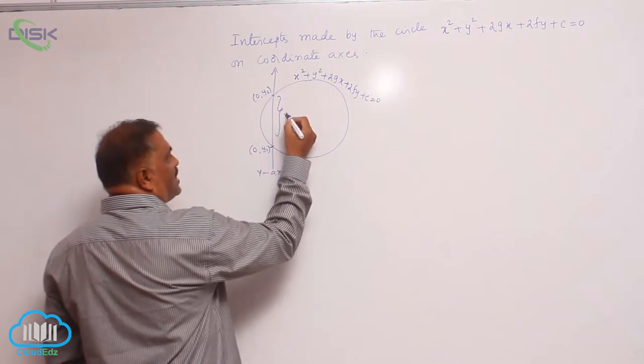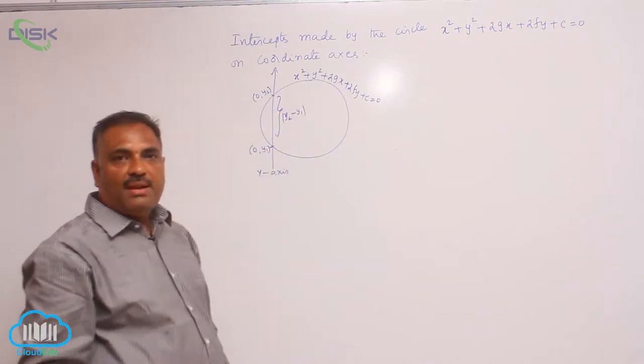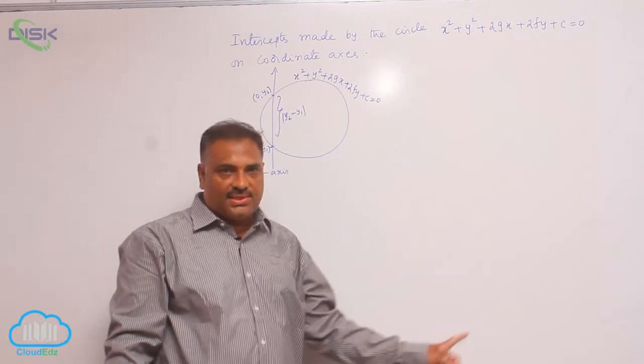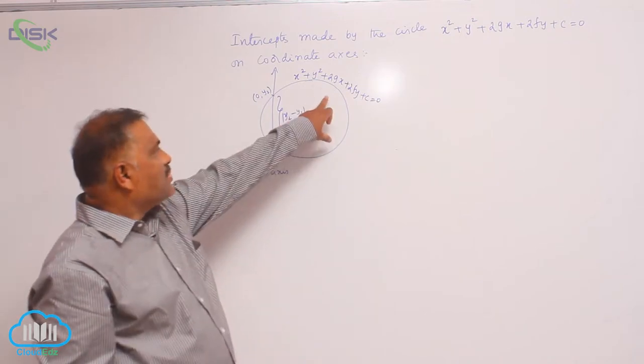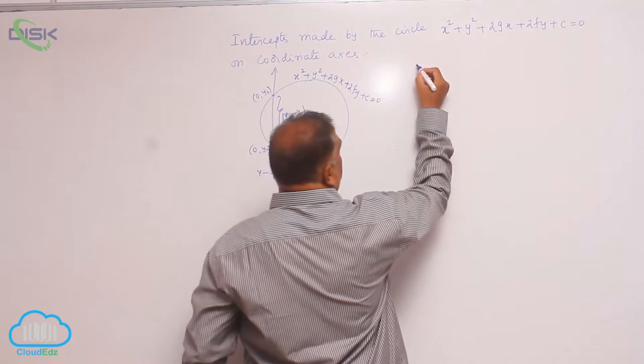So in the same fashion, y₂ minus y₁ is the intercept made by the circle on the y-axis. Now the question is, what is the equation of the y-axis? x is equal to 0.